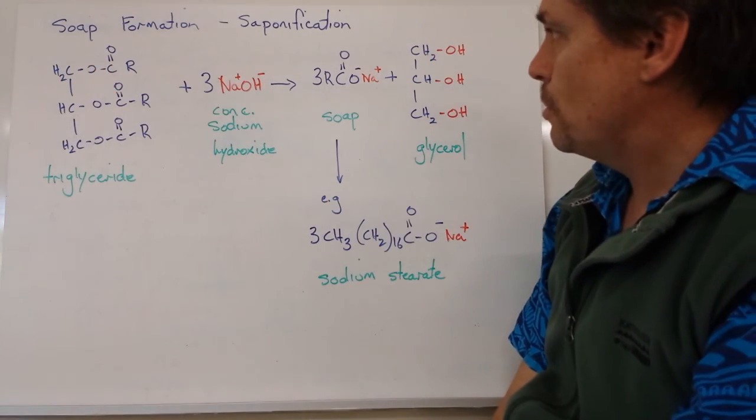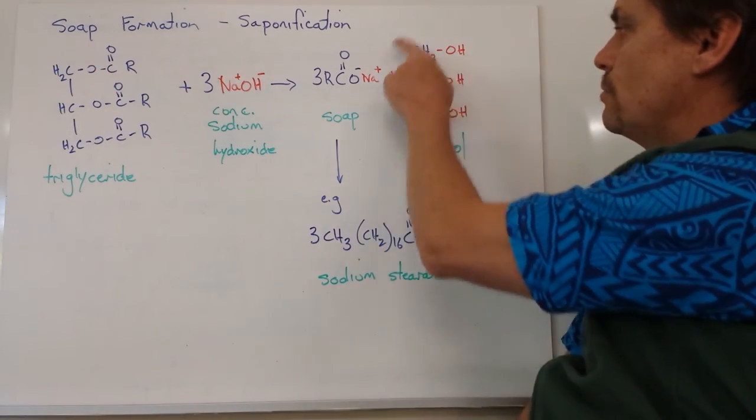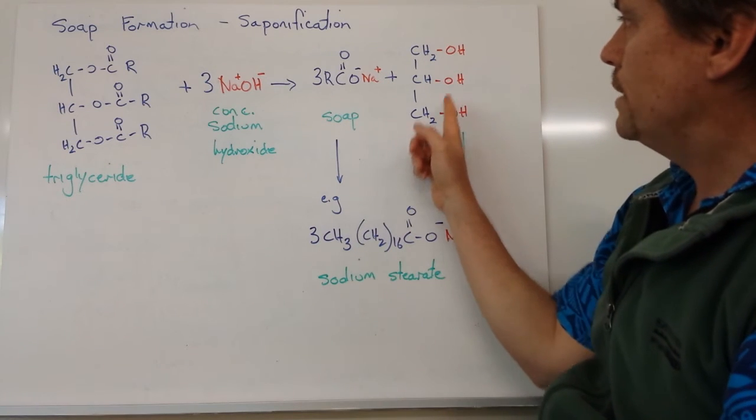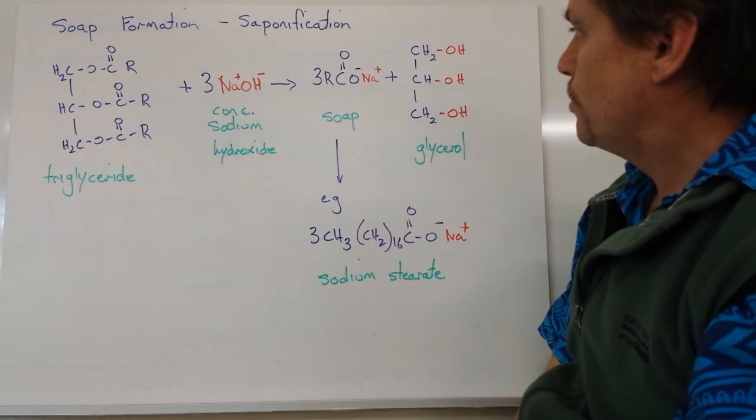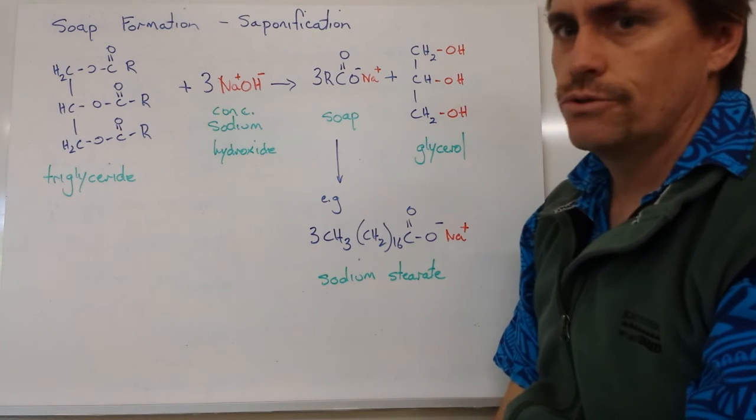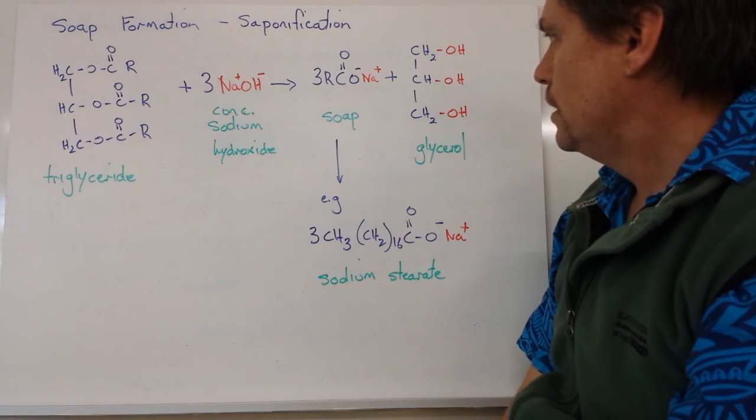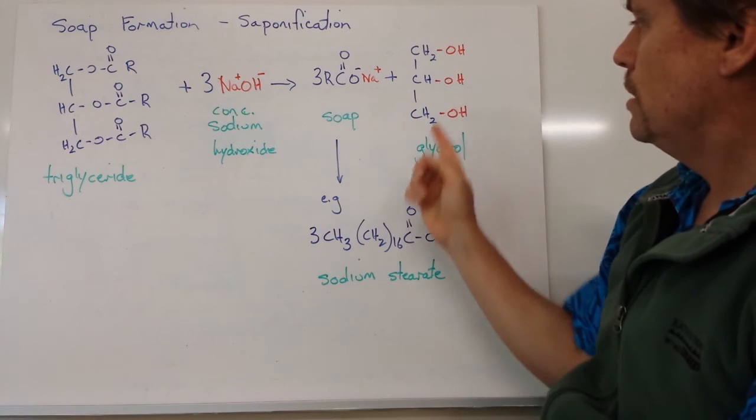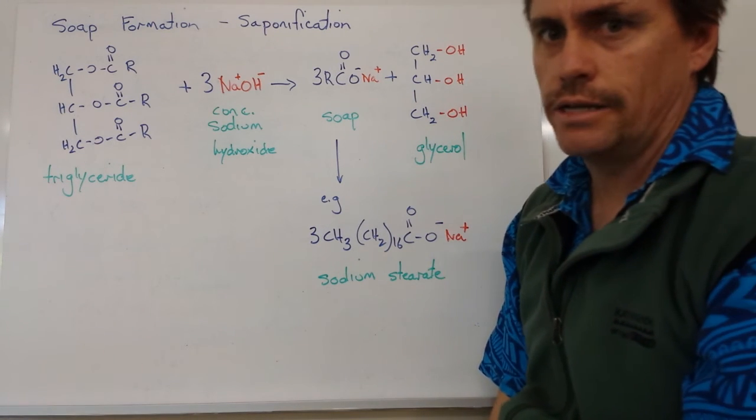So the other product that we'll end up with is a glycerol molecule, or a propane 1, 2, 3 triol molecule, which is essentially an alkanol, and we shorten that to a glycerol molecule.